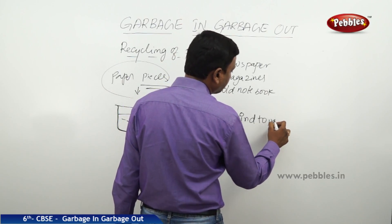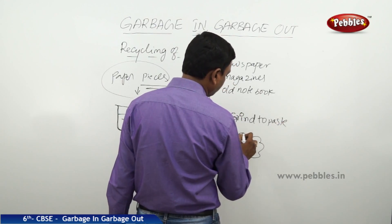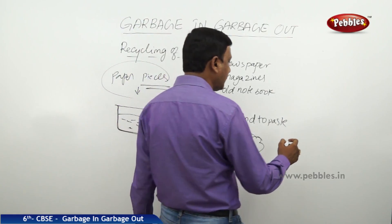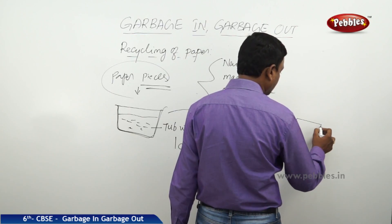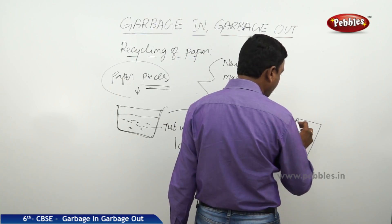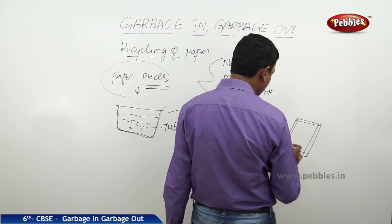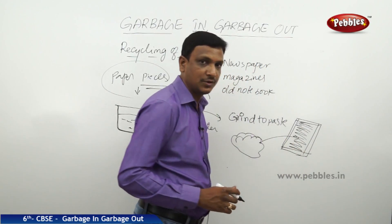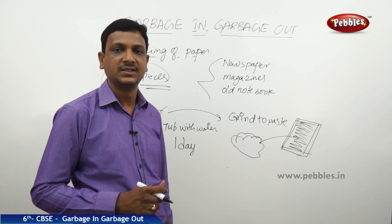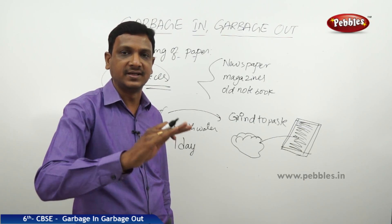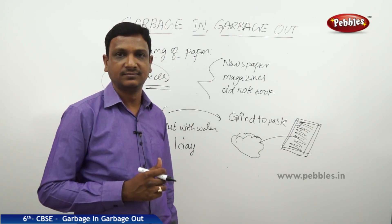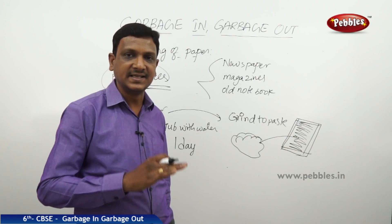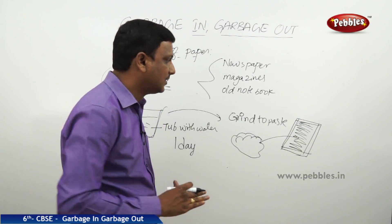After soaking, grind or pound the paper pieces into a paste. Now take a wooden frame with a mesh or sieve, and apply the paste onto it as an even layer, pressing it down, then keep the frame in the sun to dry.